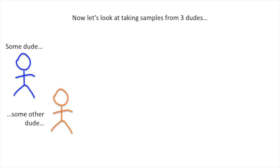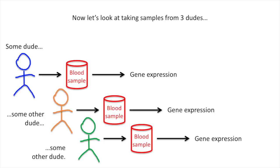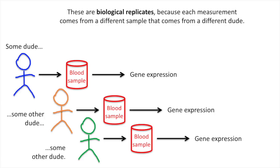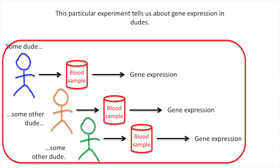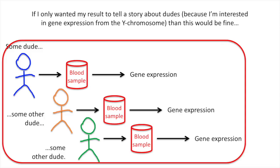Now let's look at taking samples from three dudes. We've got some dude, some other dude, and some other dude. Once we get the samples, we measure gene expression in each one. These are biological replicates because each measurement comes from a different sample that comes from a different dude. Biological replicates tell us about the gene expression in a group of dudes, or animals, or plants, or cell lines, etc. This particular experiment tells us about gene expression in dudes. It doesn't tell us about gene expression in ladies. If I only wanted my result to tell a story about dudes, because I'm interested in gene expression from the Y chromosome, then this would be fine.